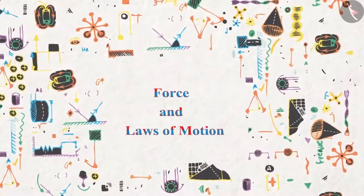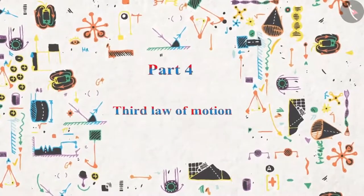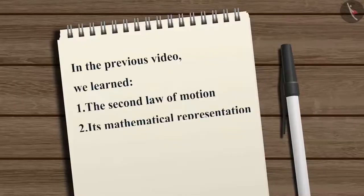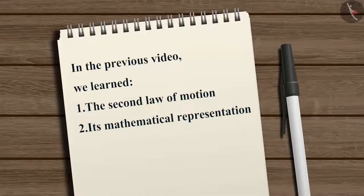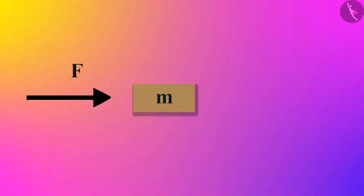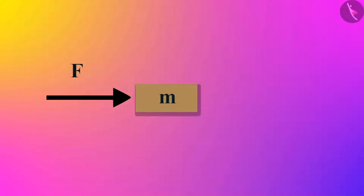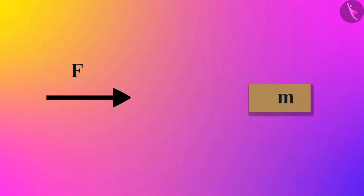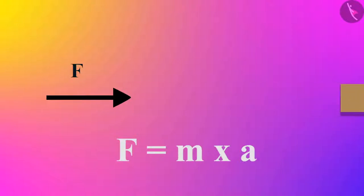Force and laws of motion, Part 4: Third law of motion. In the previous video we learned about the second law of motion and saw its mathematical representation. In this video we will learn about the third law of motion. The first law tells us how an applied external unbalanced force changes the motion of an object, and the second law tells us how this applied force on the object can be measured using its mass and acceleration.